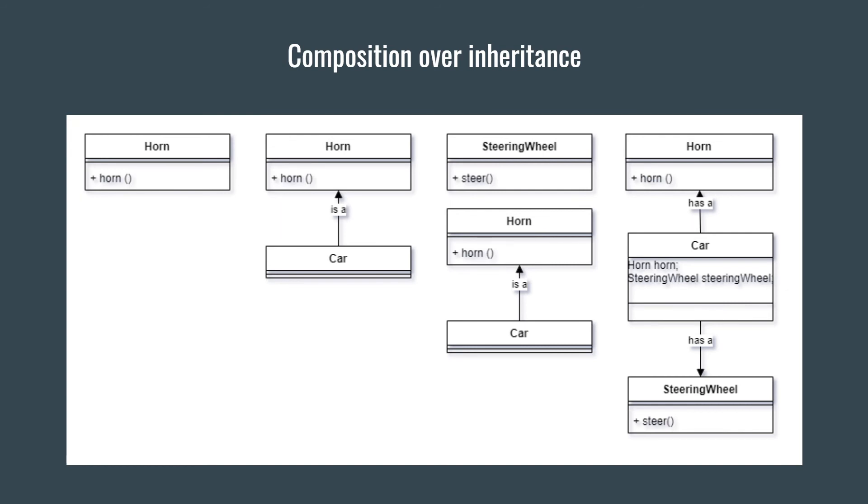The bigger your inheritance chain will grow, the more could have used inheritance turns into should have used composition. This is because of the rigidity of inheritance.